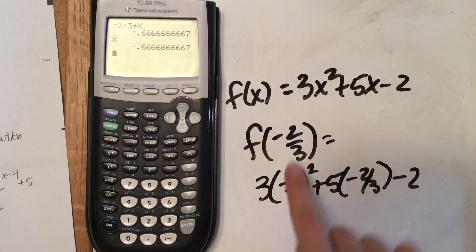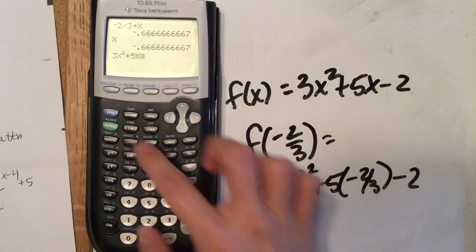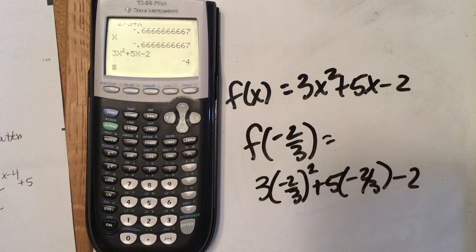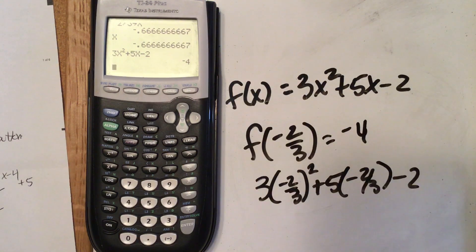So here, if I want to calculate this, I can just do 3x² + 5x - 2, and then I hit enter, and it gives me -4. So then f(-2/3) is really -4.